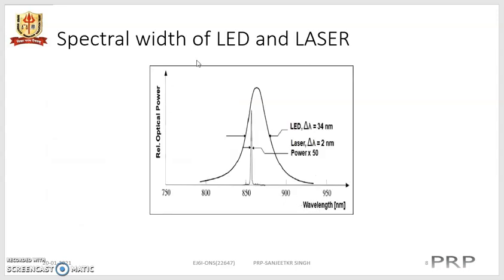Here we have the spectral width of LED and laser. For the LED, it produces a narrower spectral output — shown on the y-axis as output power and on the x-axis as wavelength in nanometers — compared to the laser.